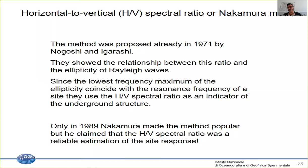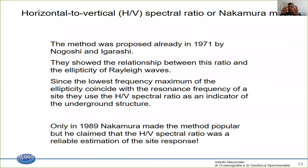The idea is that seismic noise is mainly made of surface waves, and especially on the vertical component, surface waves are mainly Rayleigh waves. Depending on the underground structure, each frequency will have a different polarization — a different shape of ellipse — because different frequencies have different wavelengths. Low frequencies have long wavelengths and go deeper into the earth, seeing a different structure than high frequencies, which are related to near-surface shallow velocity and therefore have small wavelengths and only sense the shallow part.